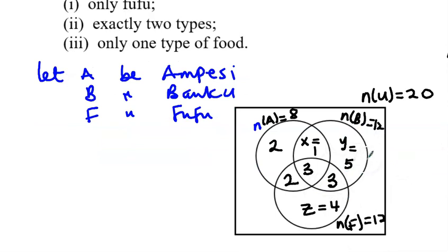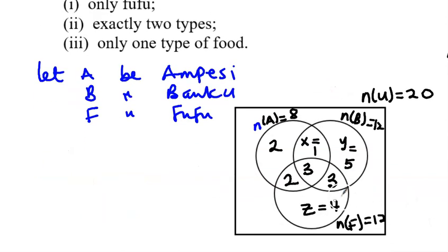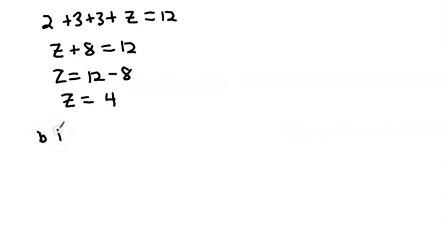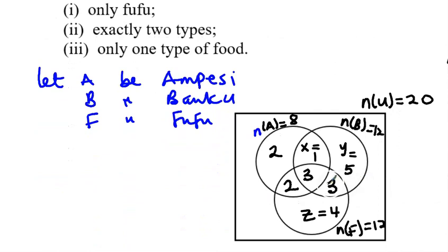Now let's go to the sub-questions. For part (b)(i), we need to find the number of people who like only Fufu. Looking at the Venn diagram, the Fufu-only region is 4. So the answer to (b)(i), only Fufu, is 4.